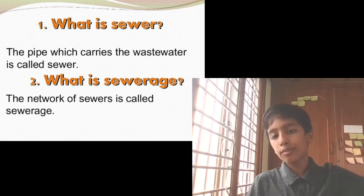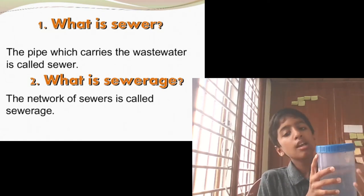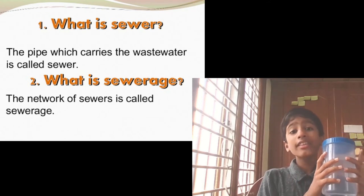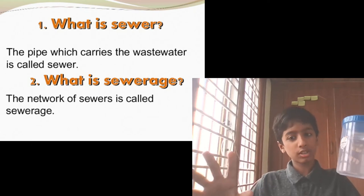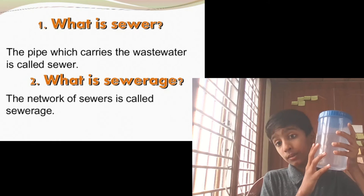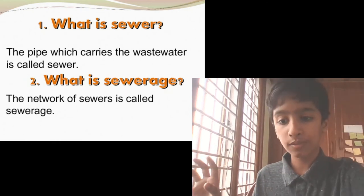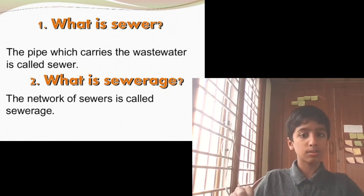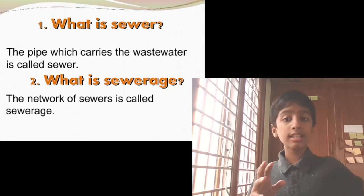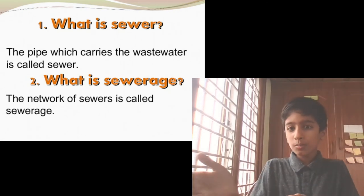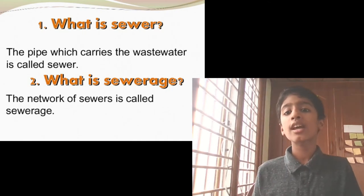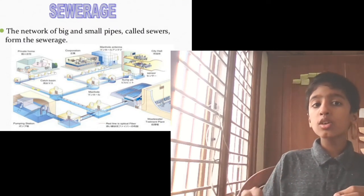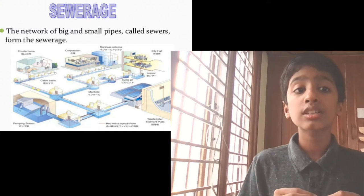A pipe which carries wastewater is called a sewer. After using fresh water for bathing, mopping, or washing, the water gets contaminated and that wastewater has to be carried somewhere — that's where the sewer comes in. In a city, there are many sewers from each home, and the network of these big and small pipes is called sewerage.